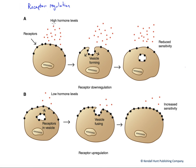In response to high hormone levels — a large circulating concentration of hormone molecules — the cellular response would tend to be quite large. However, in response to that, vesicles form where we endocytose membrane-bound receptors, reducing the likelihood of interaction of hormone with those reduced number of receptors. This, of course, reduces the sensitivity of that cell.